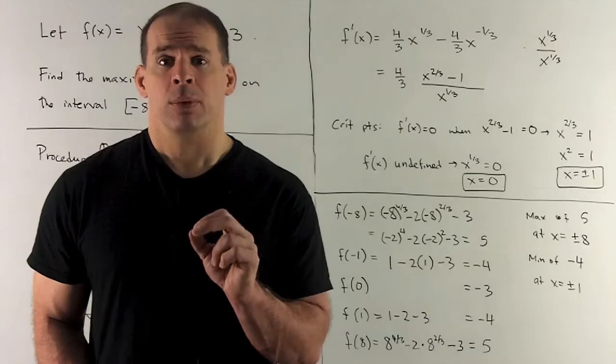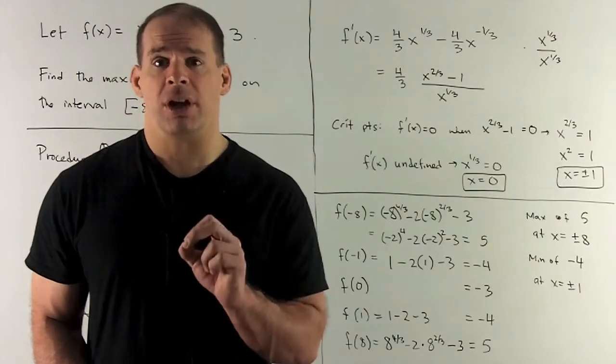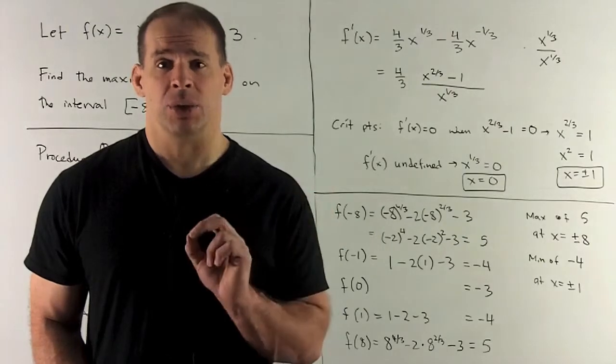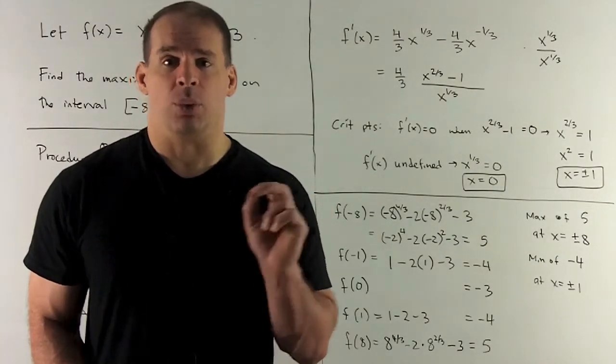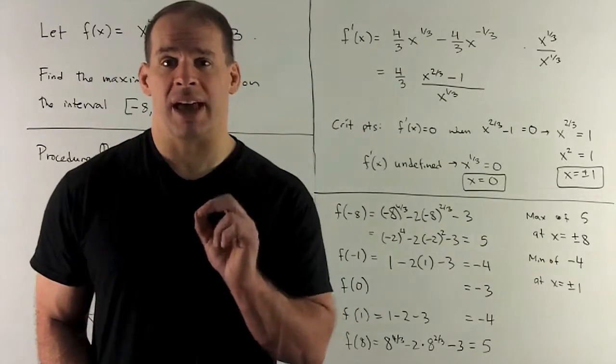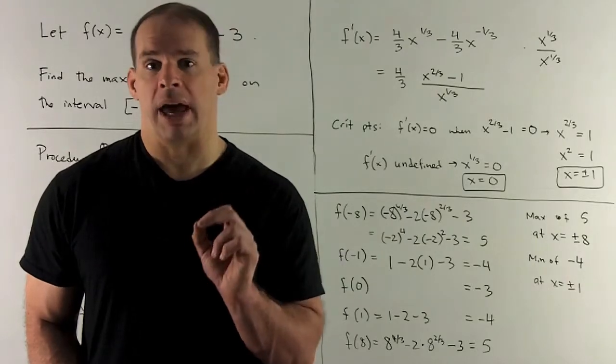We need to be careful here with that cube root. If I took x^(2/3) and raised both sides to the 3/2 power, you'll note we'll only get x = 1 for a solution. We'll miss the x = -1. So we need to be careful there.